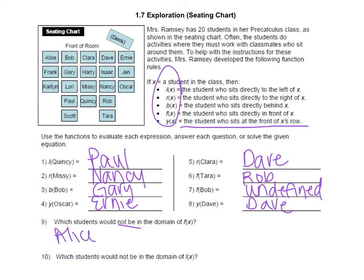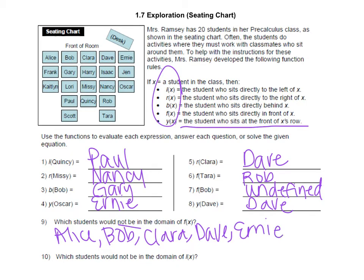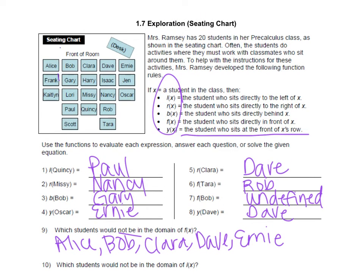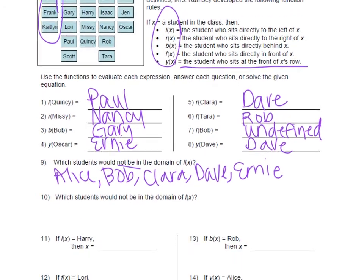So that would be Alice, Bob, Clara, Dave, and Ernie. Or you could have just said the front row people if you don't want to write them all out. Which students would not be in the domain of L of x? L of x is to the left of, so which students do not have anybody to the left of them? Well, it would have to be this row: Alice, Frank, and Caitlin, because there's nobody to the left of them. If I said find who is to the left of Alice, that would be undefined. So I would write Alice, Frank, and Caitlin.